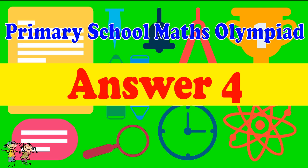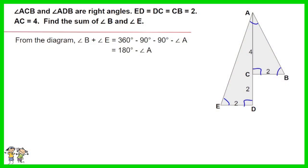Answer for question 4: From the diagram, angle B plus angle E equals 360 minus 90 minus 90 minus angle A. The result is 180 degrees minus angle A.